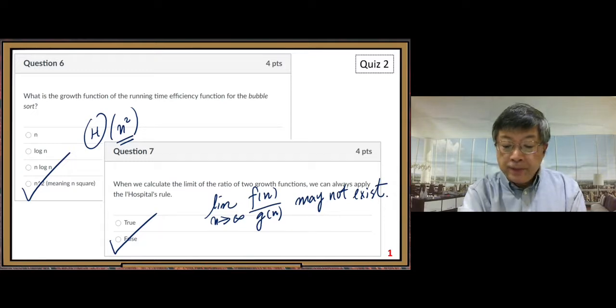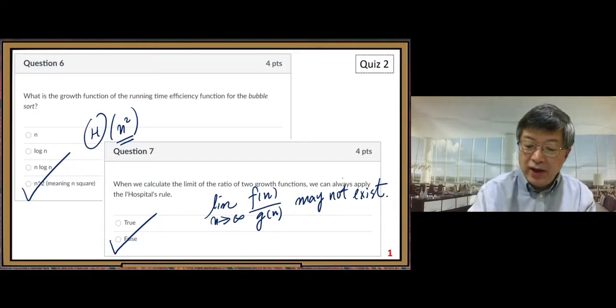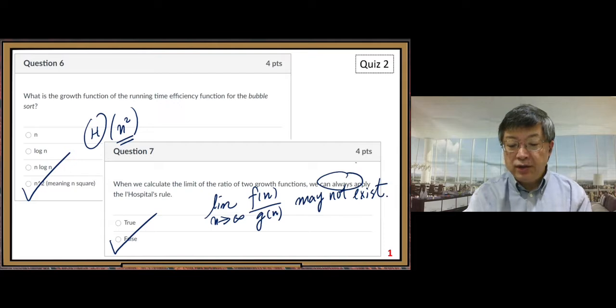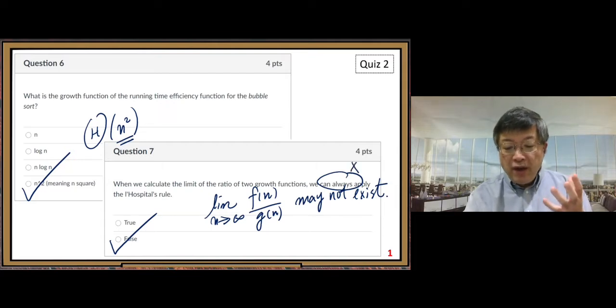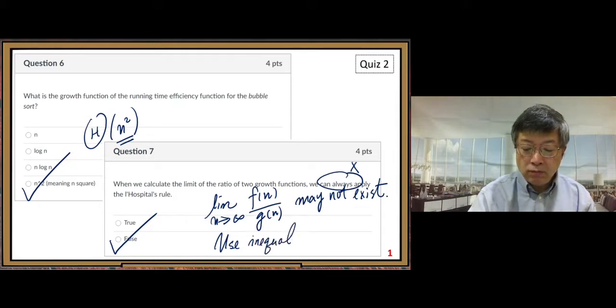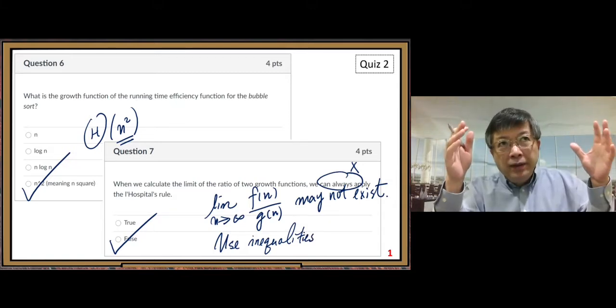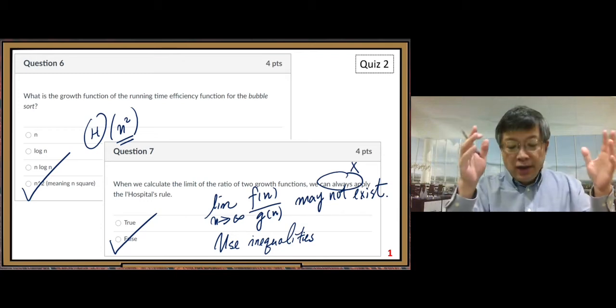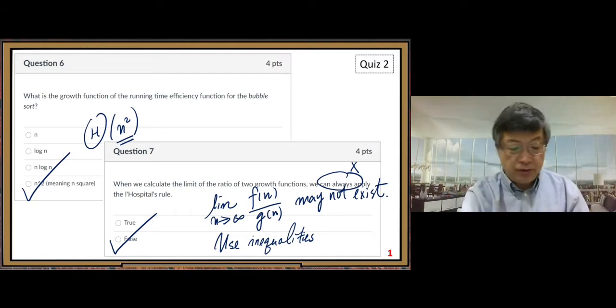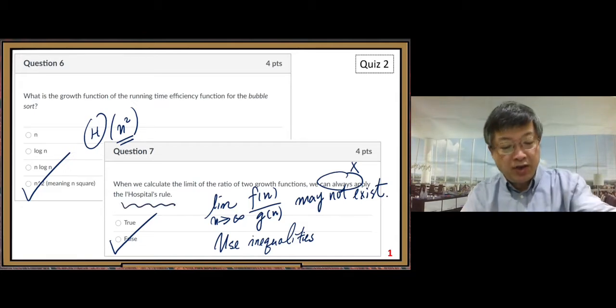All right. Then we can always—so that's the problem. The problem is here: we can always. So that is not correct. But if it does not exist, we can still use another way. Inequalities. Inequalities: upper bound, lower bound. Based on the definition of asymptotic notation. So we can still find the answer, but not necessarily using L'Hôpital's rule. So that's the problem.